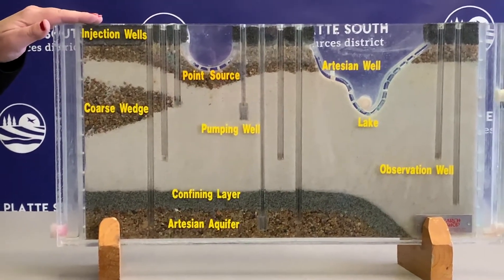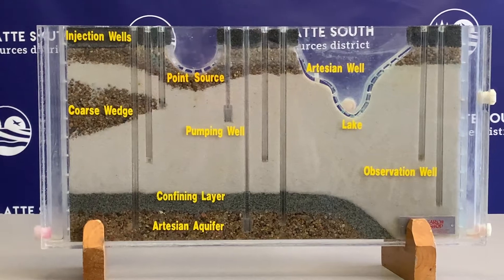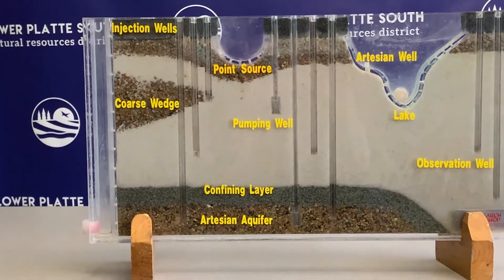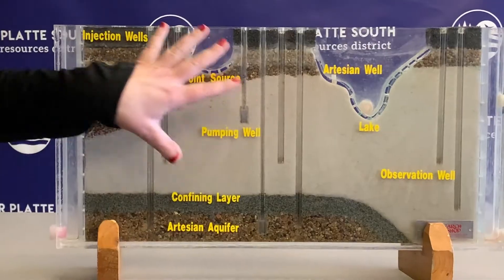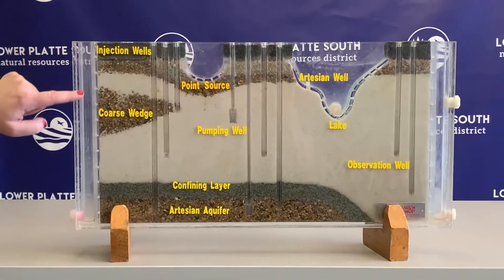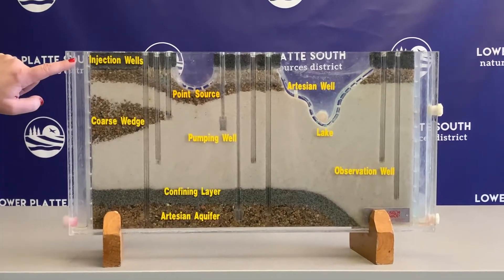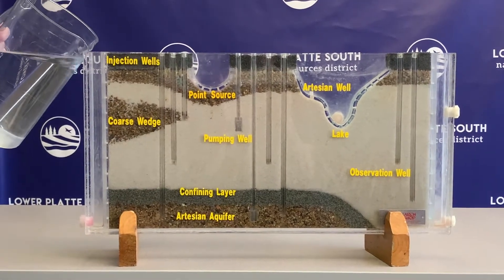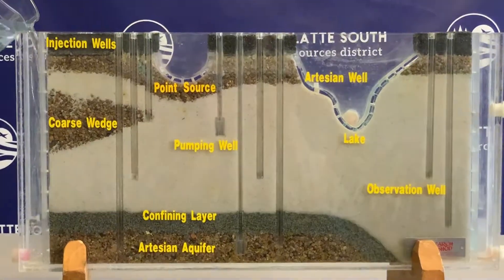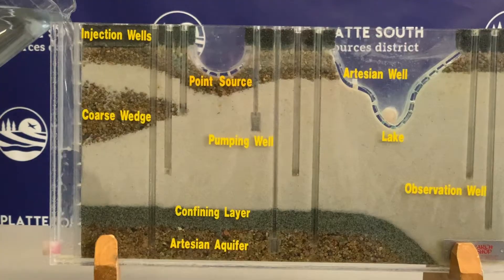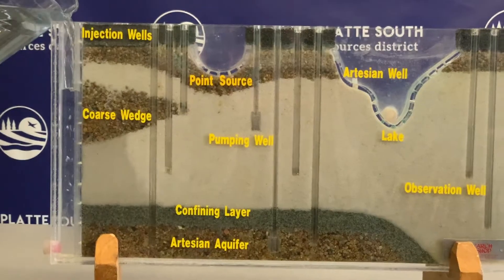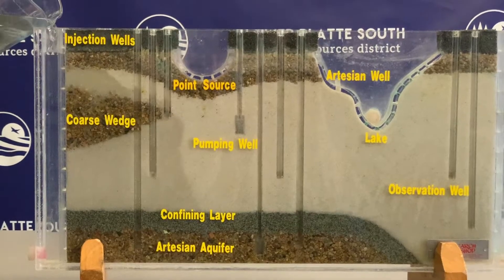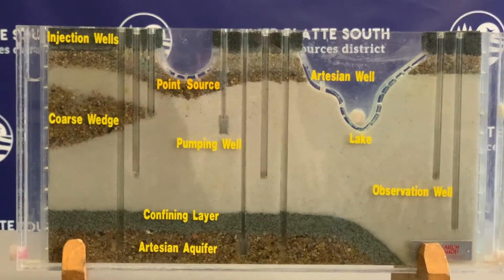How do we get water into the ground? Well, it comes to us in the form of precipitation. I'm going to go ahead and add some water, and I want you to pay attention to what happens to the color of the sand as I add the water. You'll see the column over here start to fill up with water when I pour it in. When you think of forms of precipitation, what do you think of? I think of rain, snow, hail, sleet — anything that falls from the sky and puts water back into the ground.